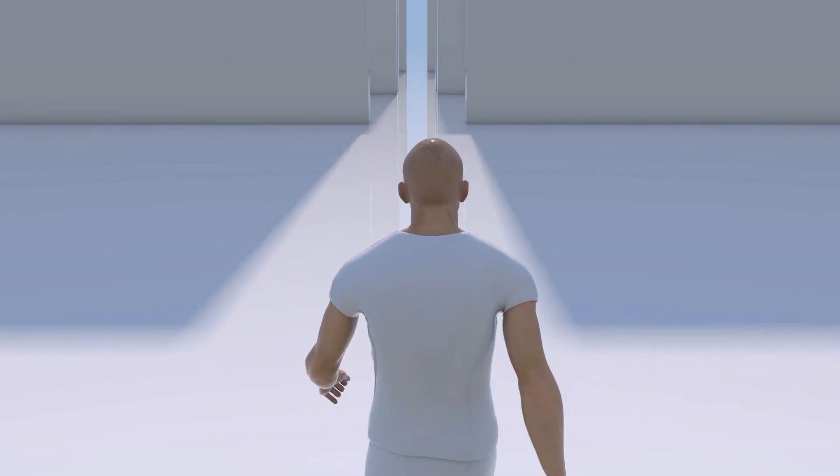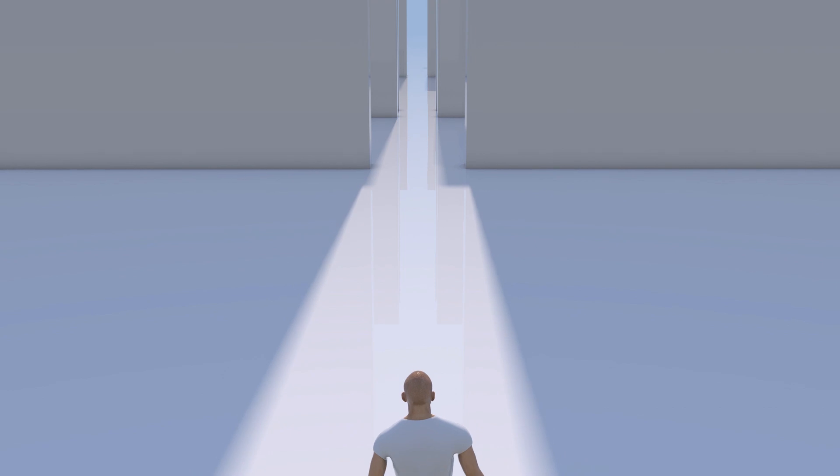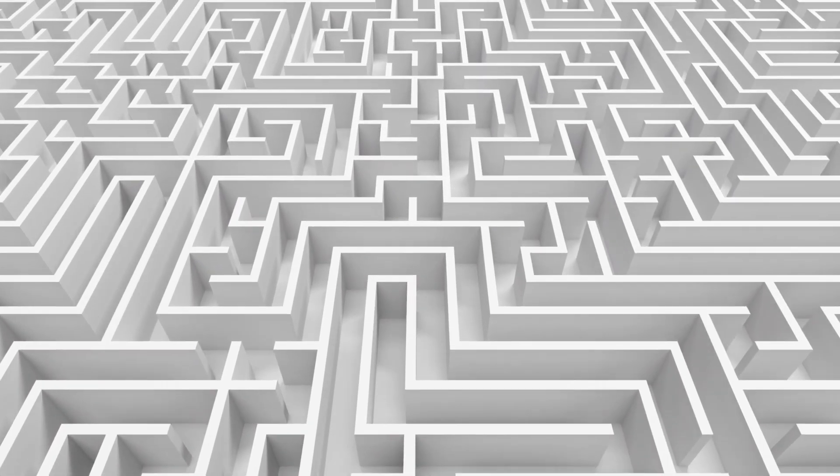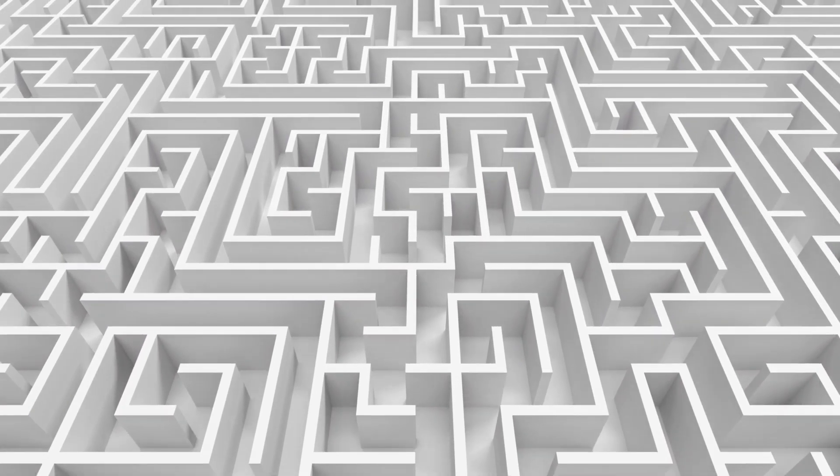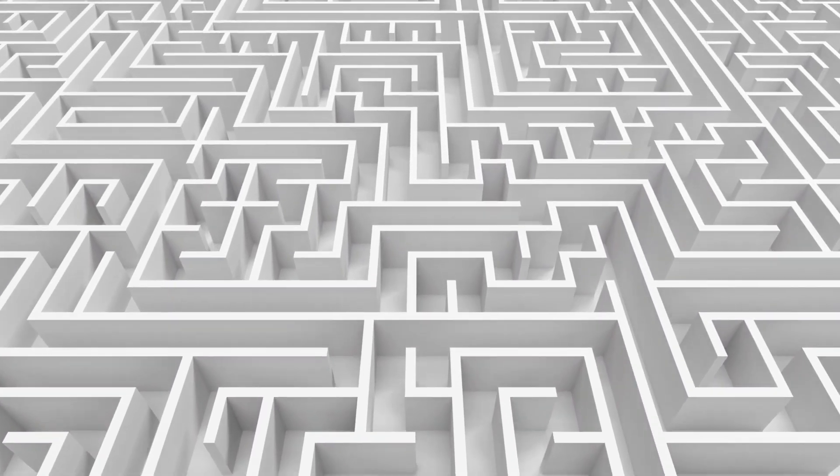If you ask a typical computer to figure its way out of a maze, it will try every single branch in turn, ruling them out all individually until it finds the right one. But a quantum computer can go down every path of the maze at once. It can hold uncertainty in its head.